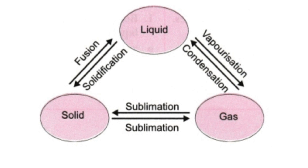In the inter-conversion of states of matter: solids change into liquid, liquids change into gas, and gas changes into solid. On heating, when the solid changes to liquid, we call it fusion or melting. On heating, when liquid changes into gas, we call it vaporization. On heating, when solid changes directly into gas, we call it sublimation.